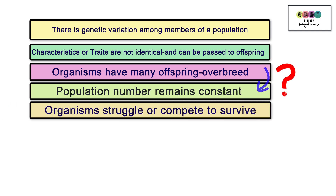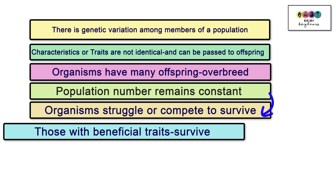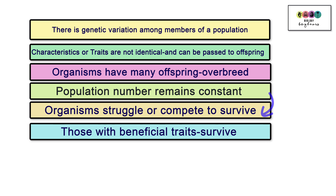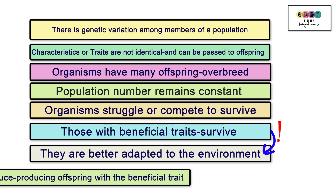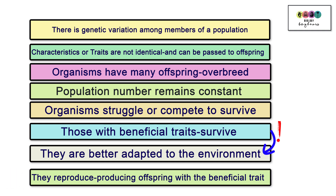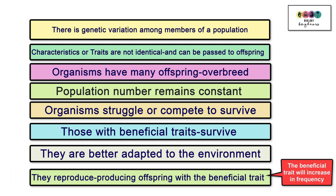Organisms struggle or compete for survival. Only those with the beneficial traits survive because they are better adapted to the environment. These organisms will reproduce, producing offspring with the beneficial trait, and slowly over time more of the population will have that beneficial trait.